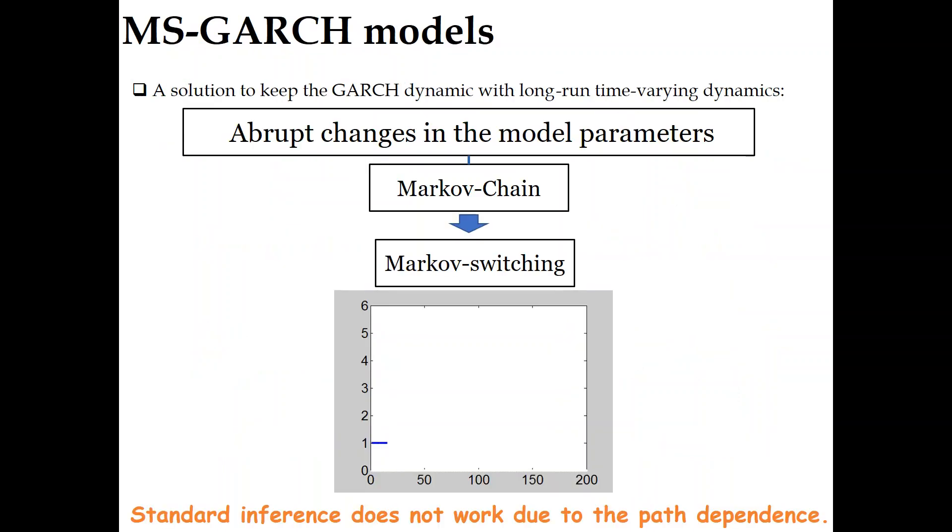In this paper, we focus on the Markov-switching GARCH model. It allows the GARCH parameters to abruptly change over time according to an ergodic Markov chain. While being flexible, the MS-GARCH model is difficult to estimate due to the path dependency issue, and standard algorithms, such as the forward-backward algorithm, break down.